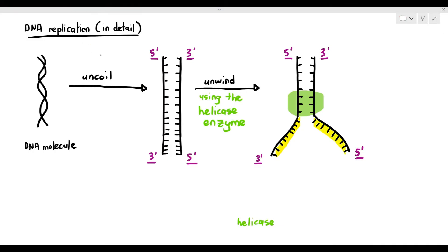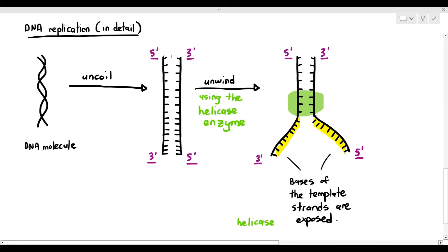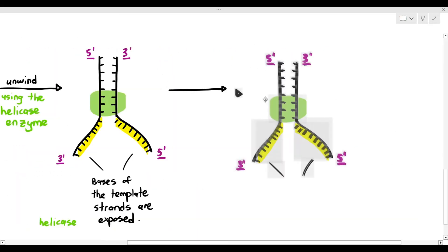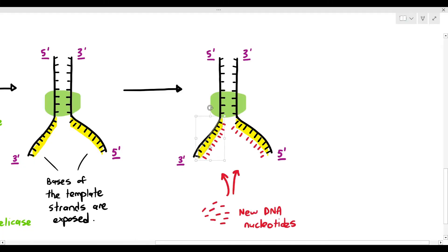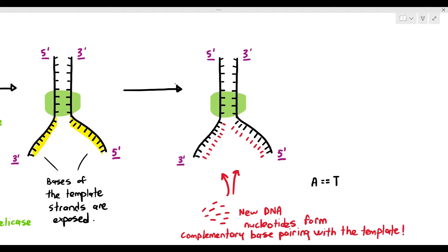The highlighted parts show that the bases of the template strands are now exposed. If you remember the basic principle we saw earlier, the template strands have to be exposed so that new DNA nucleotides can go and bind to it. So when we have the new DNA nucleotides, they will form complementary base pairings with the exposed template strands.